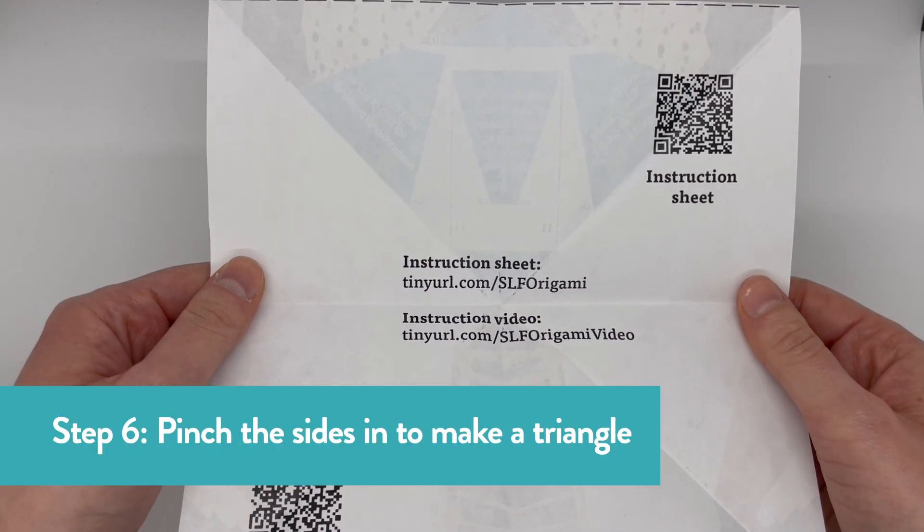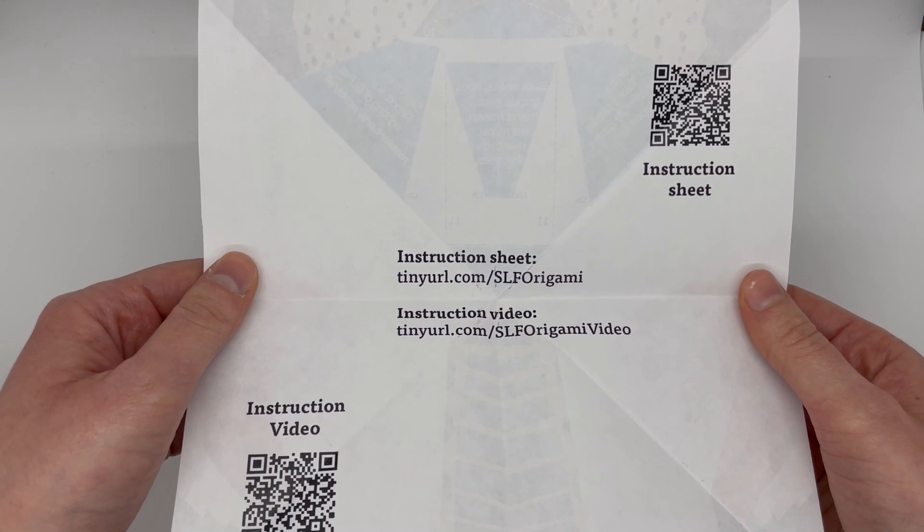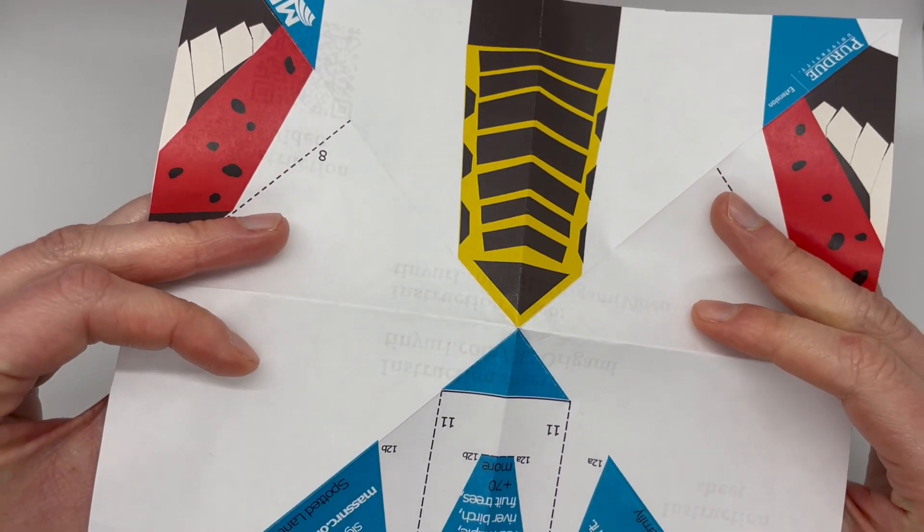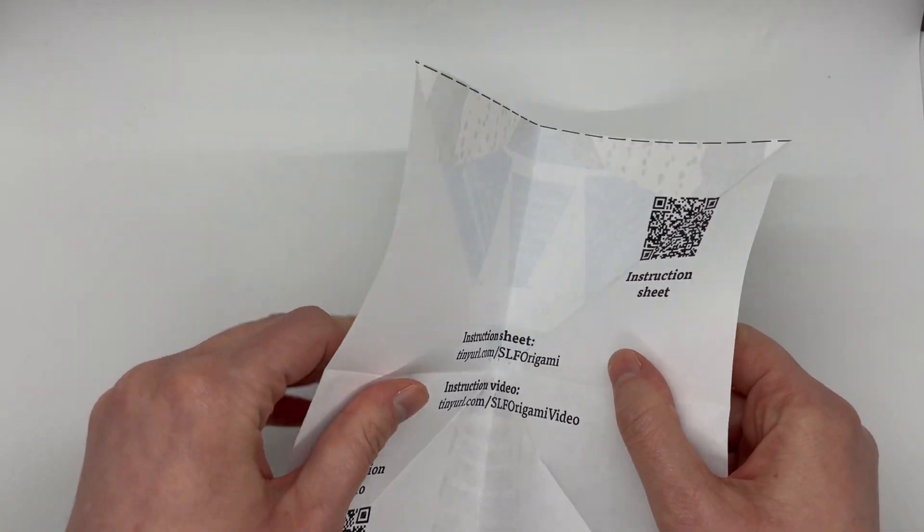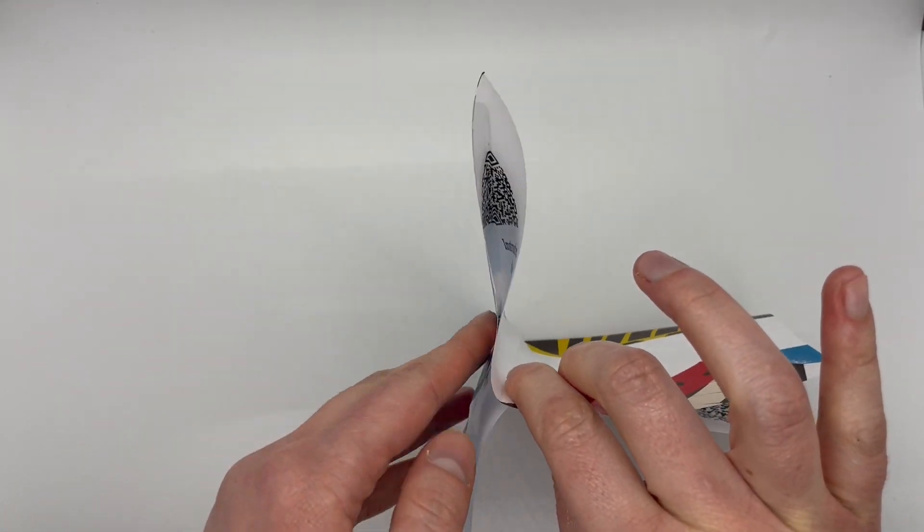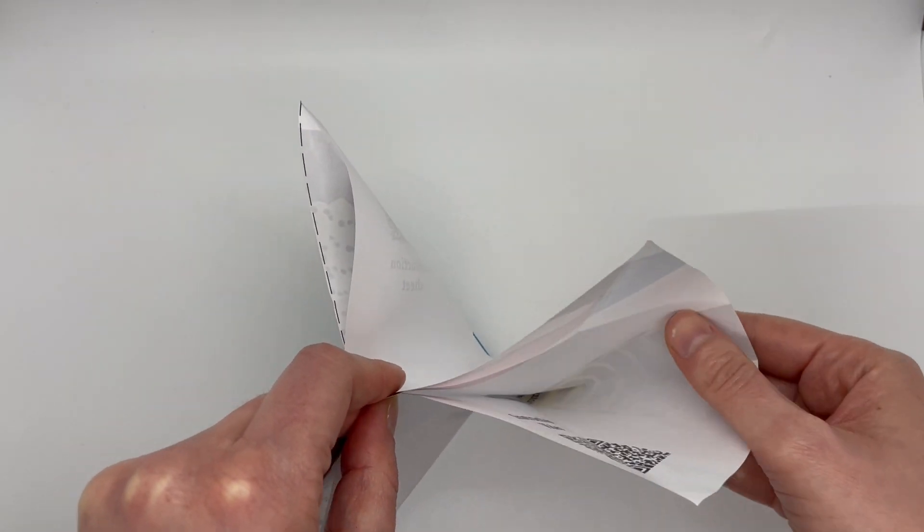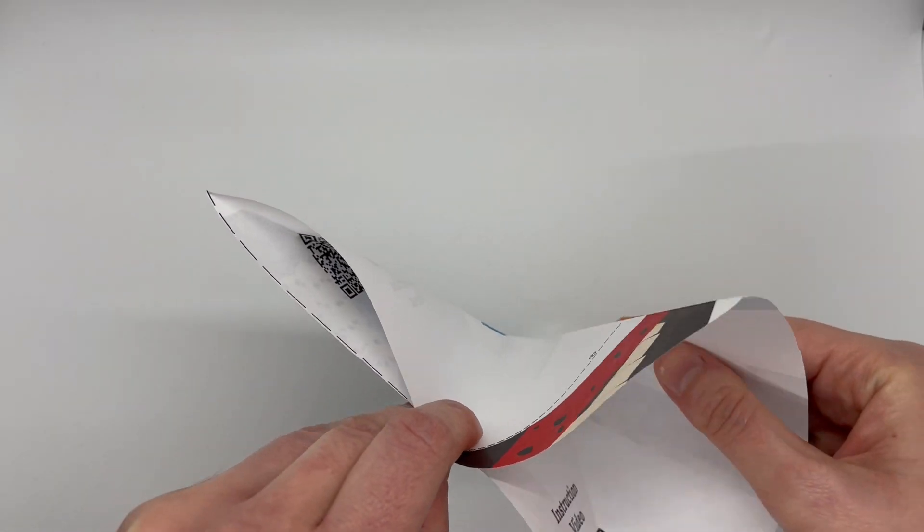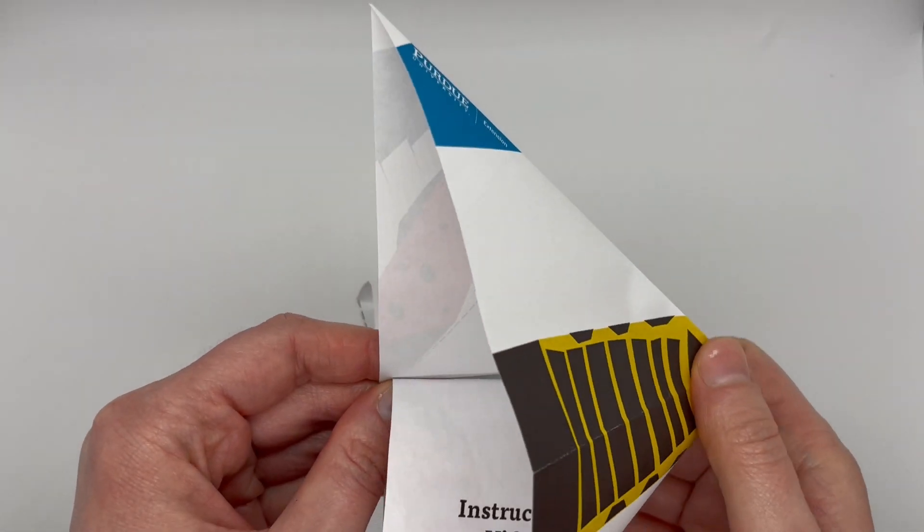Now comes the first tricky part. Pinch the horizontal fold together and hold it in place, then push the vertical fold up to meet it. Do the same thing with the other side. Sometimes it doesn't fold smoothly and you may need to reach inside and smooth it out. Once everything is settled, flatten it all out into a two-layered triangle.